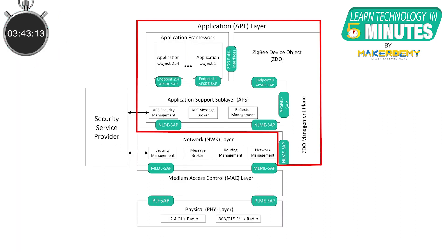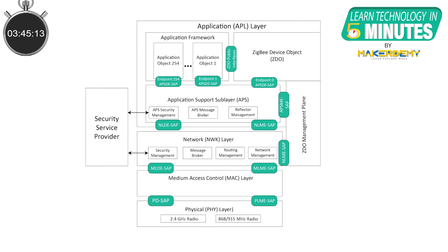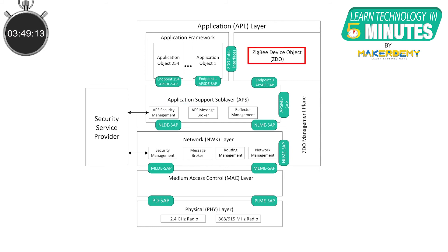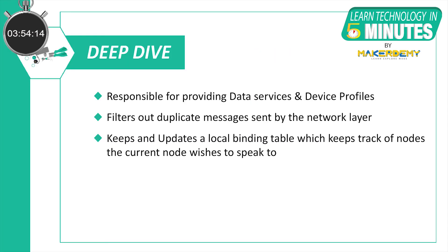The final layer is the application layer. The application layer consists of the application support sublayer, Zigbee device object, and application framework. The APS layer is responsible for providing data service to the application and Zigbee device profiles. The APS layer filters out duplicate messages sent up by the network layer. The layer also keeps a local binding table that indicates the nodes or groups in the network that the current node wishes to speak to. This will facilitate more intelligent routing.